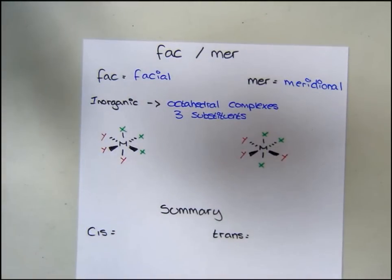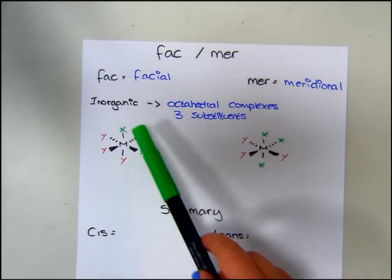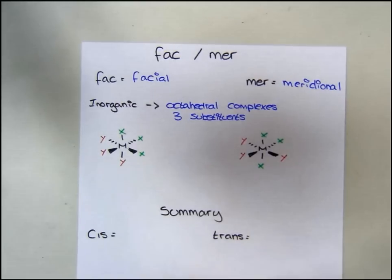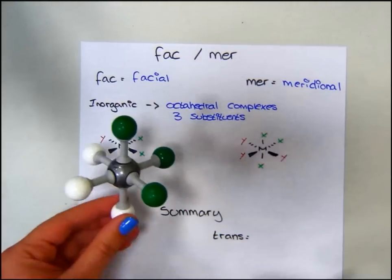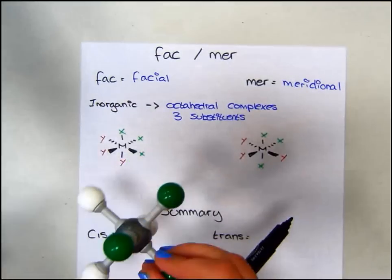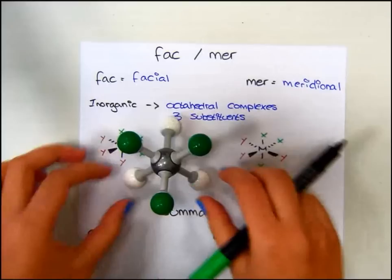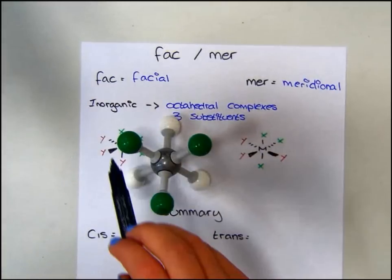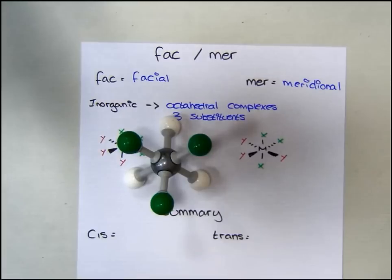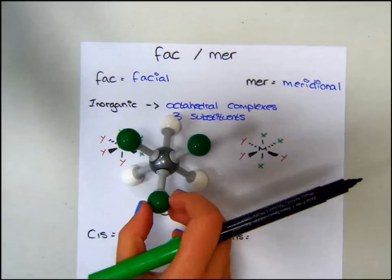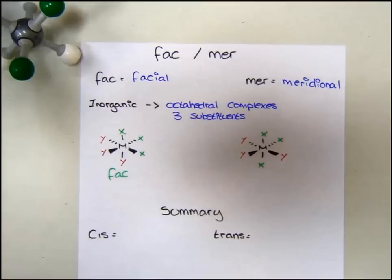Looking at the examples, we can see, this isomer has three X's here and three Y's there. And this is how it looks in 3D. Looking at the 3D model, we can see that the three X's are all on this face, and the three Y's are all on this face along the bottom. Therefore, this is known as the fac isomer.